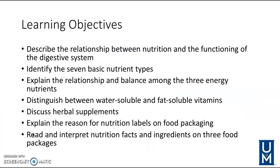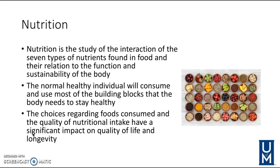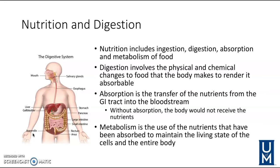Here are your learning objectives for this chapter. Nutrition is the study of the interaction of the seven types of nutrients found in food and how they relate to and keep our body healthy. Nutrition includes the ingestion, digestion, absorption, and metabolism of food. Absorption is the transfer of nutrients from the GI tract into the bloodstream — without absorption, the body would not receive the nutrients needed to stay healthy.